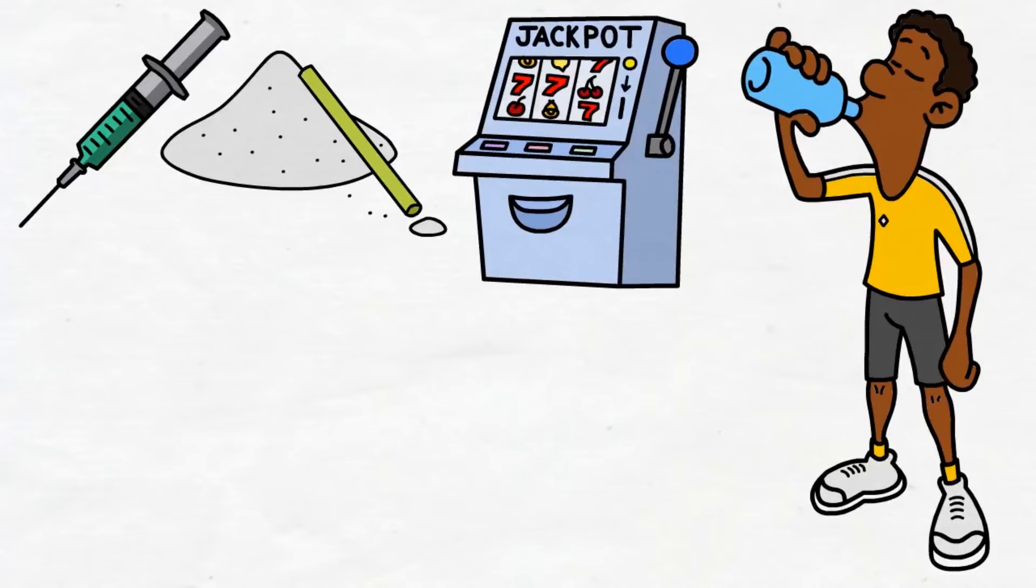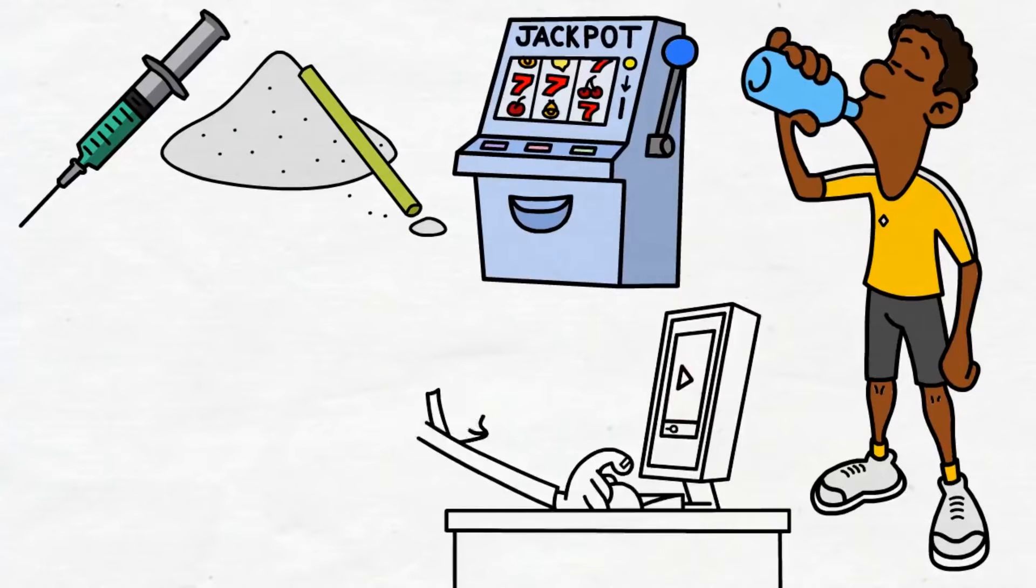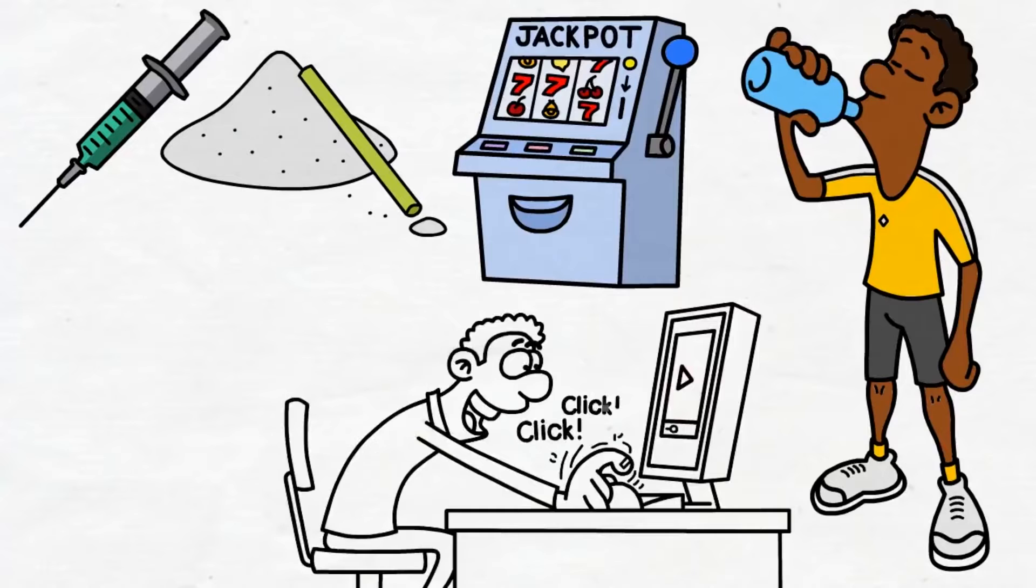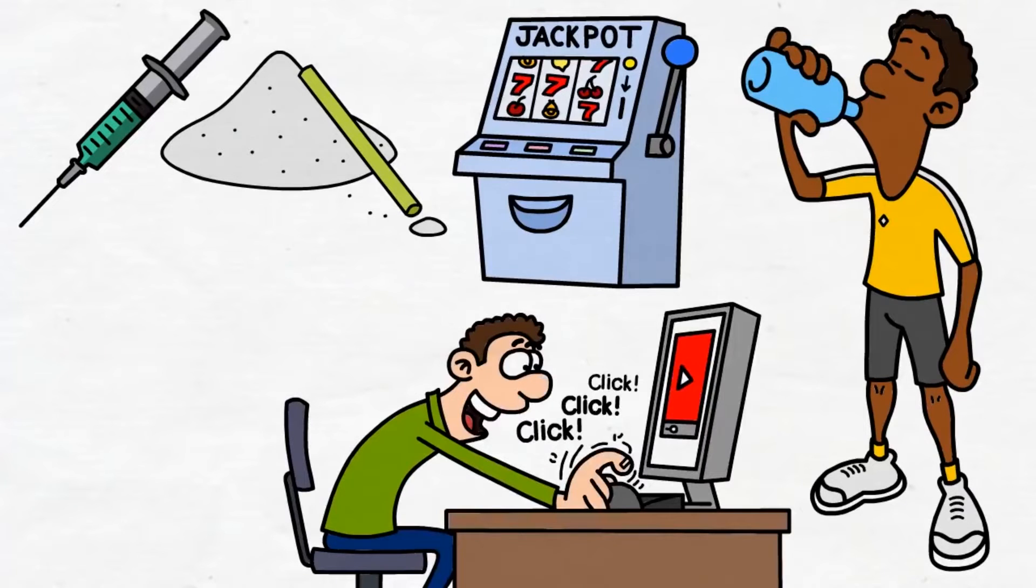And in today's digital society, we are flooding our brains with unnaturally high amounts of dopamine on a daily basis, even if we don't know it. Some examples of high dopamine behaviors include scrolling through social media websites, playing video games, watching internet pornography, etc.